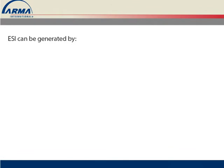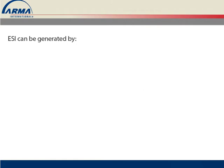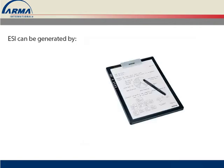Did you know that ESI can be generated by pen lights that have hidden cameras, by GPS trackers that are on just about everything that's mobile these days, and by devices that electronically capture everything you write on paper?